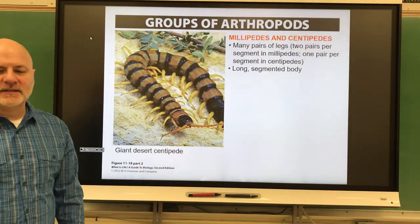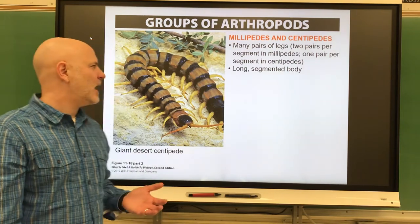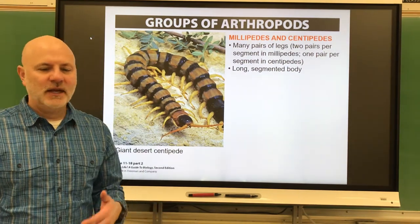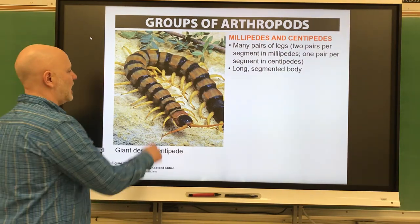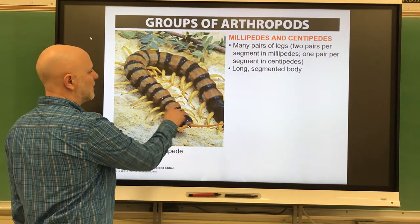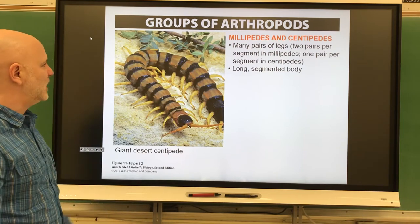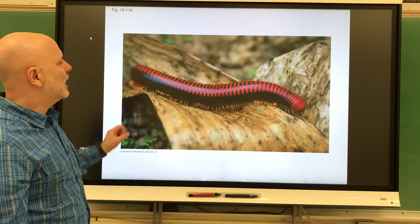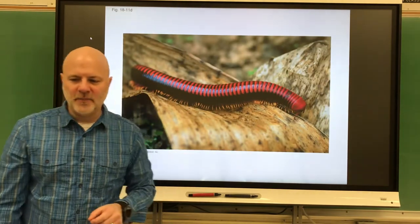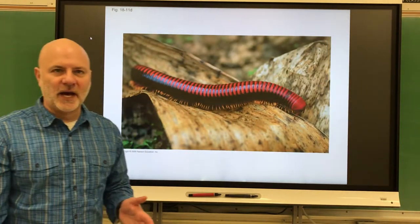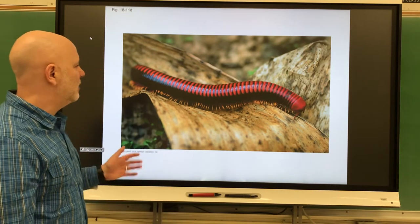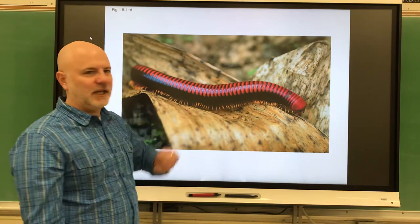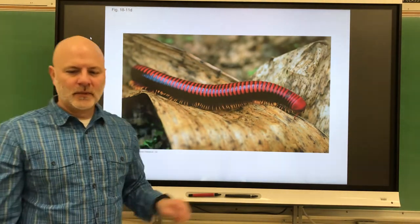Next are centipedes. These have long segmented bodies with many pairs of legs, and they are predators. Centipedes have one pair of legs per segment. Next are millipedes. Millipedes also have long segmented bodies and many pairs of legs, but they are detritivores and typically have two pairs of legs per segment.